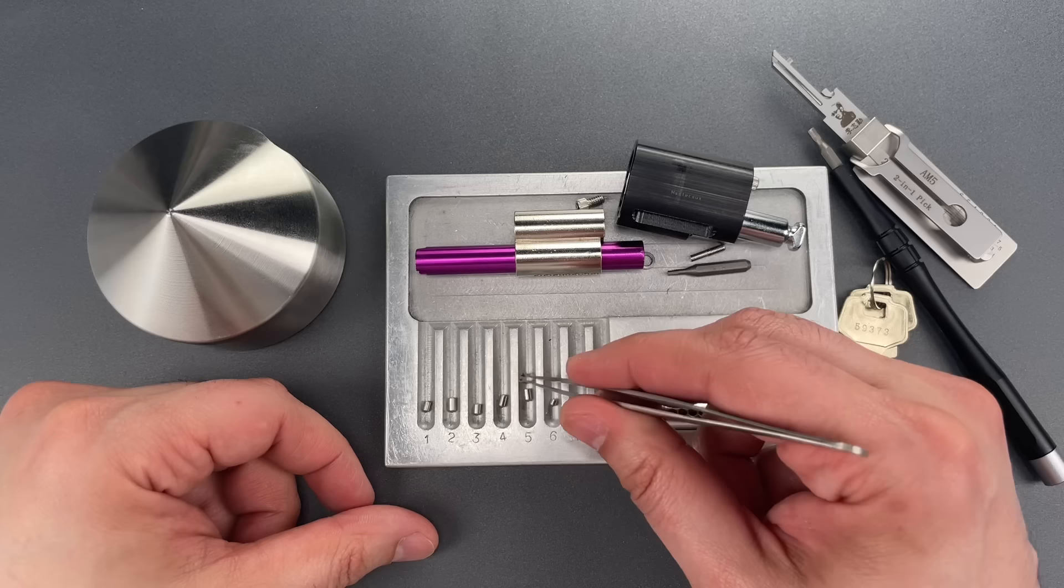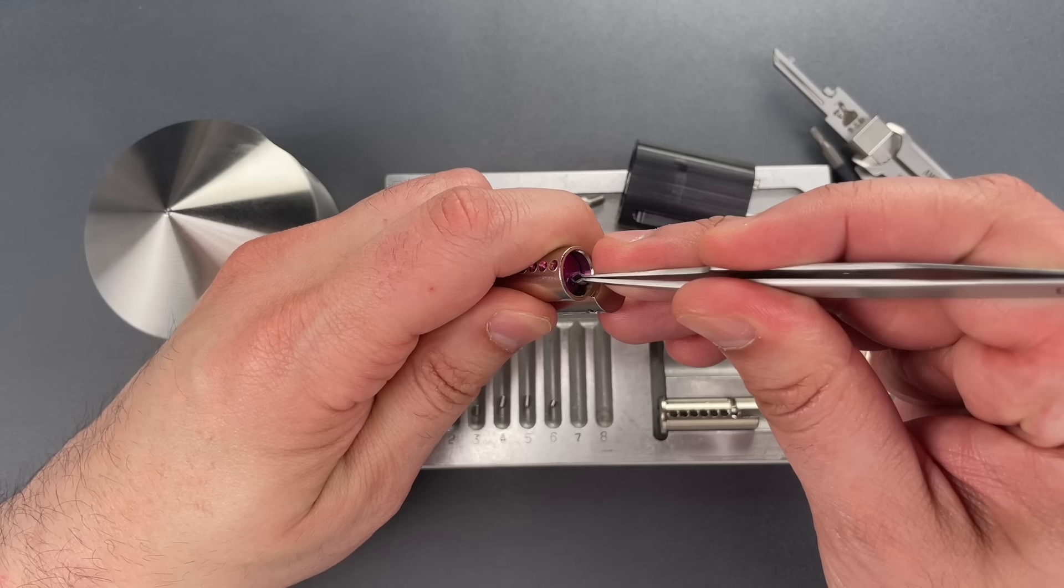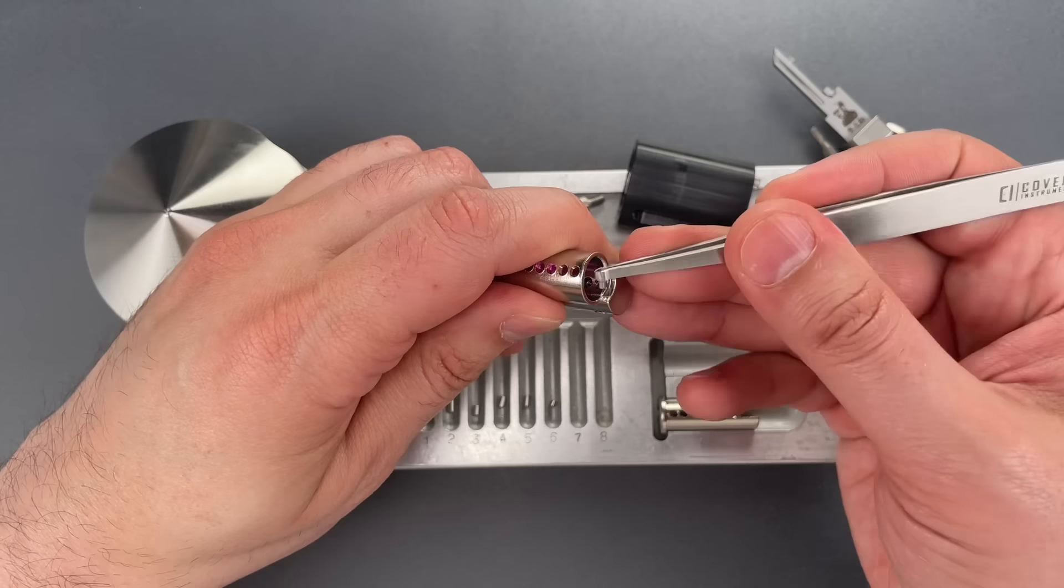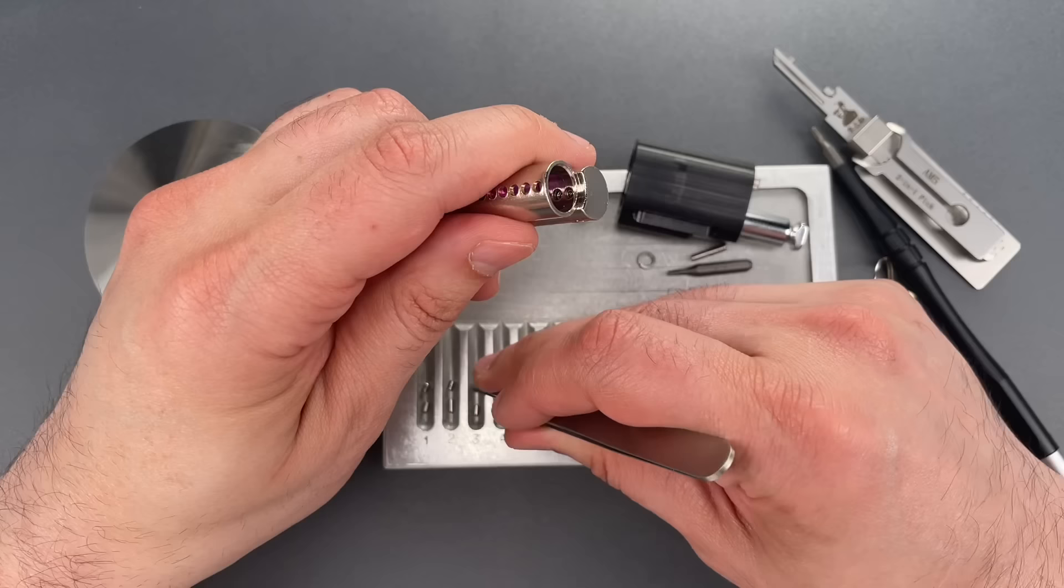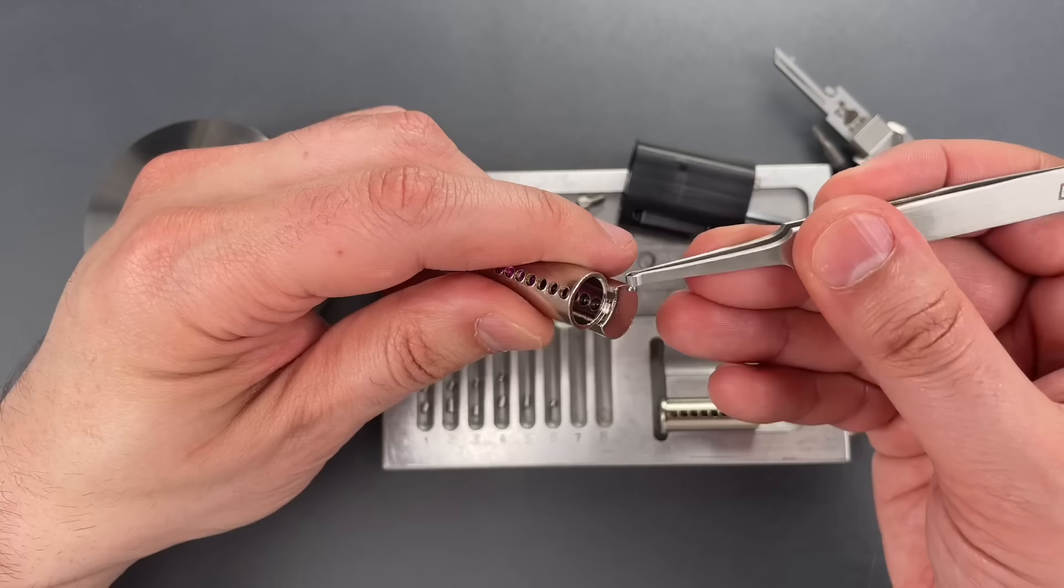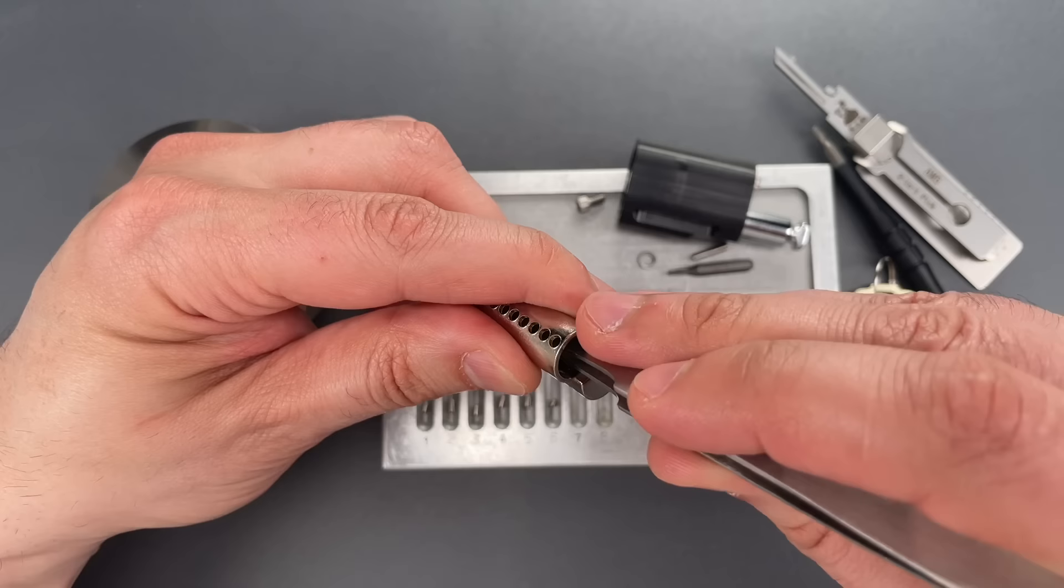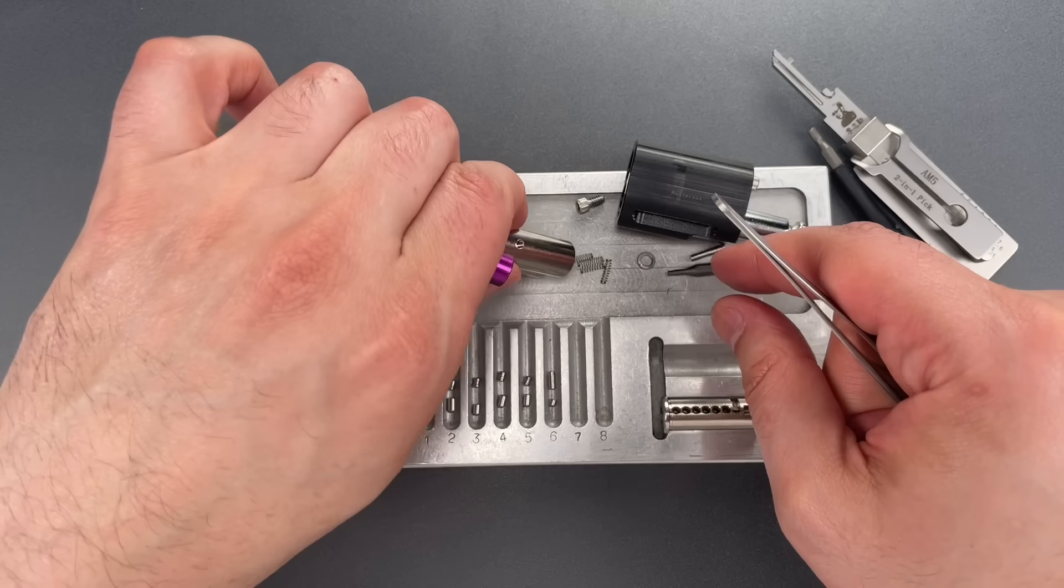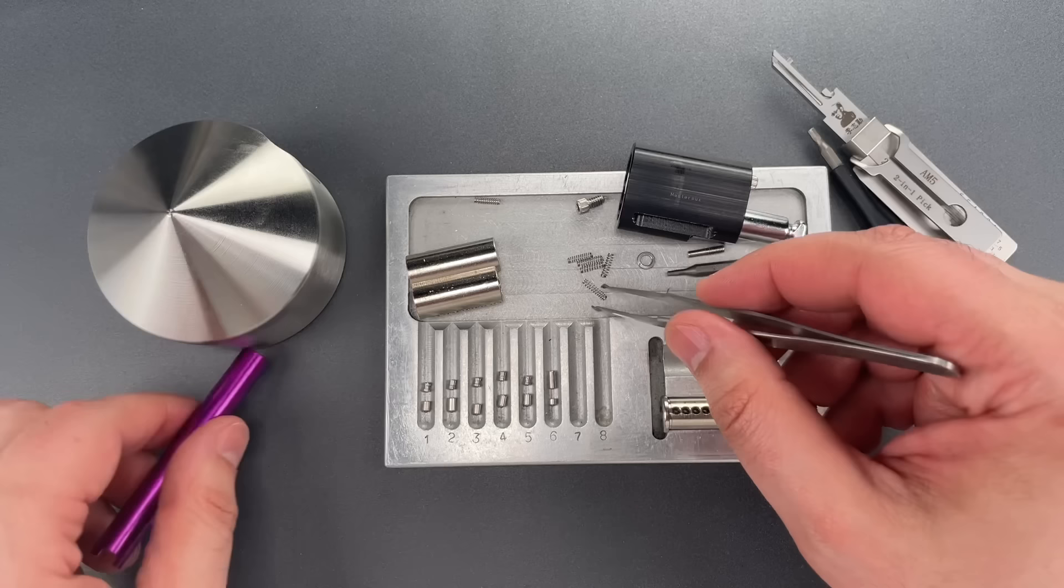We have them arranged, let's get the driver pins out. I did feel quite a few security pins in there. Number one is a spool, two is serrated, three is a spool, four is serrated, five is a spool, and six is an extra long standard pin. I'm going to drop those springs out.